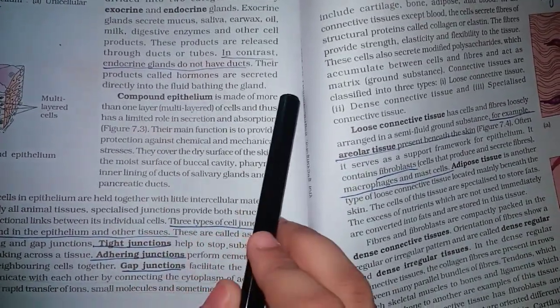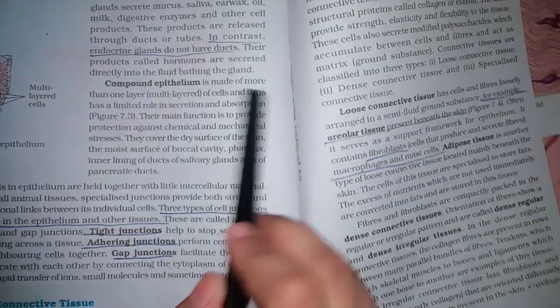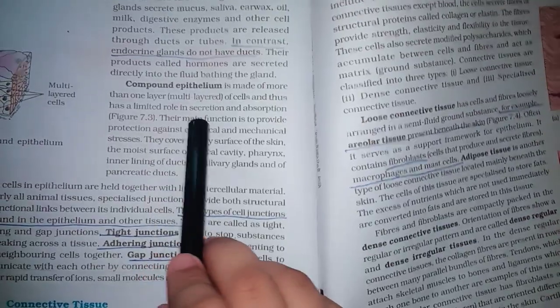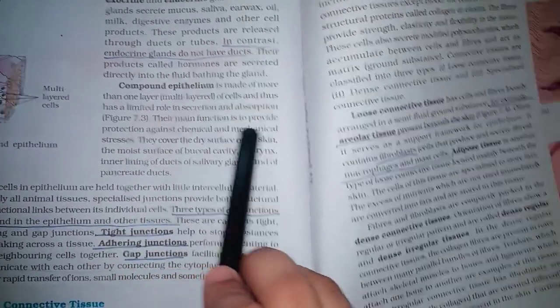Compound epithelium is made of more than one layer, multilayered of cells and thus has a limited role in secretion and absorption. Their main function is to provide protection against chemical and mechanical stresses.